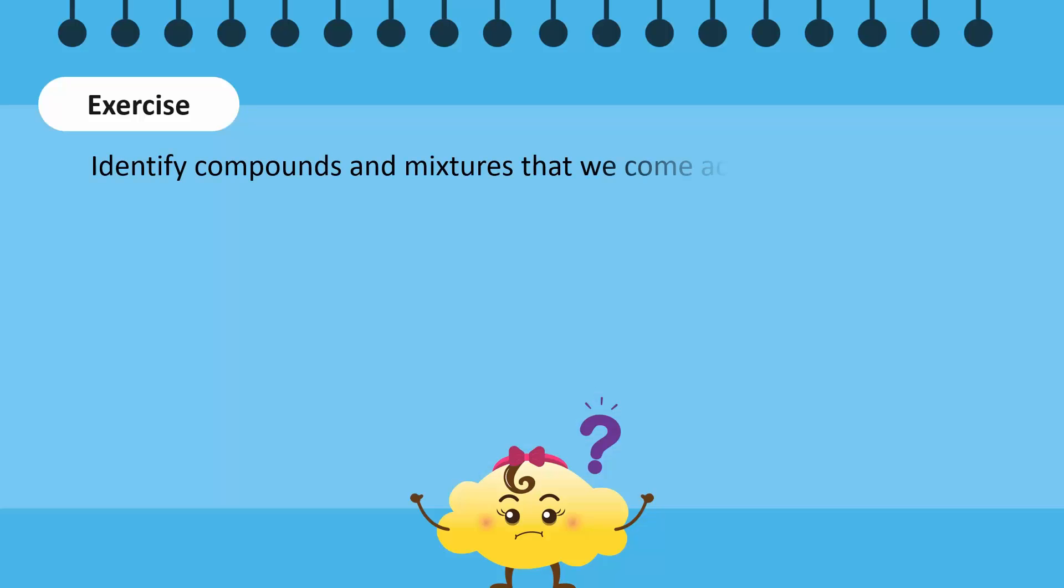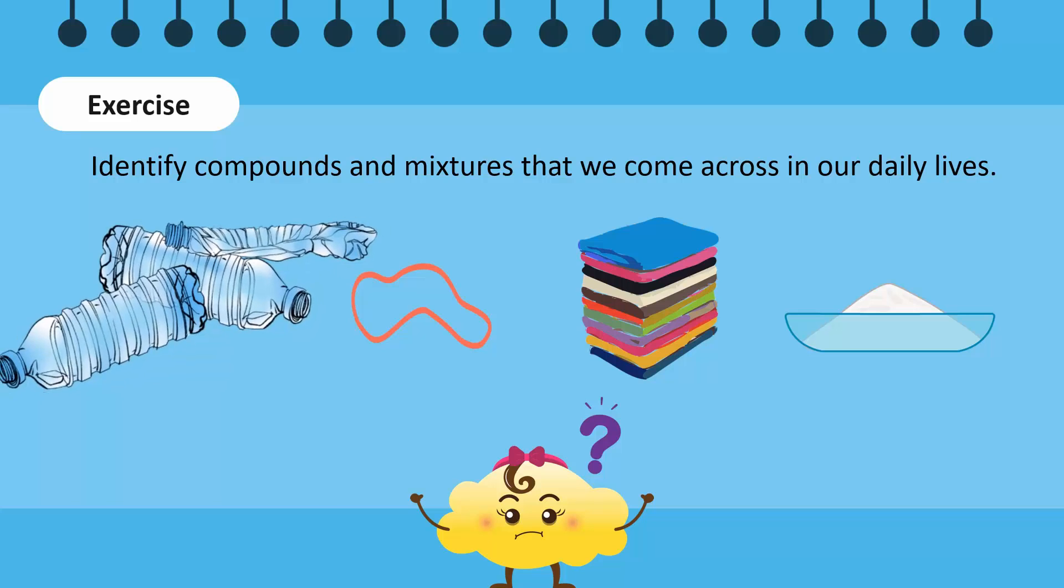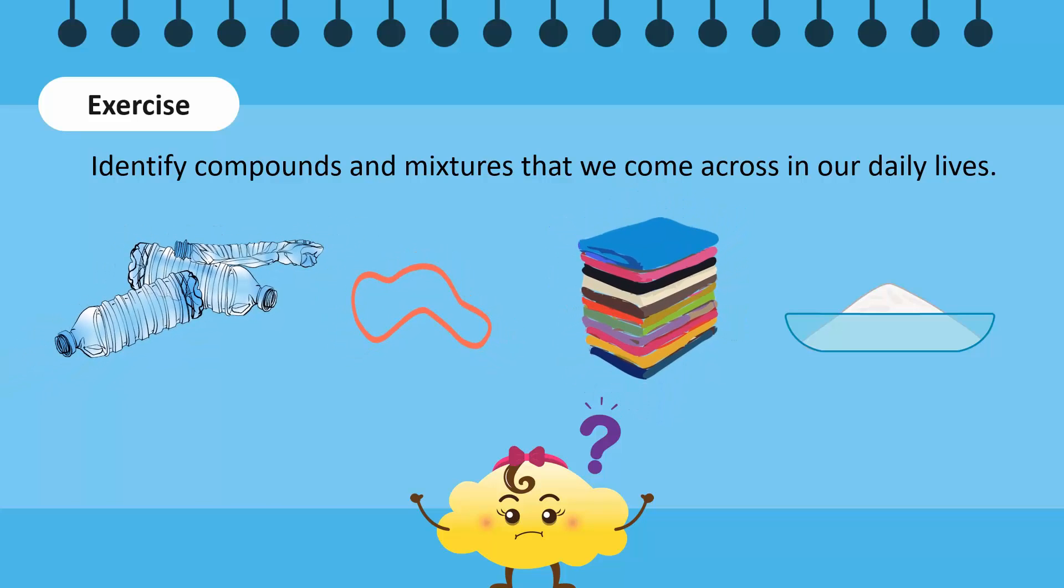Now, let's identify some compounds and mixtures that we come across in our daily lives. Some compounds that we come across daily are plastic, salt, cloth, and rubber. Plastic, rubber, and cloth are made up of carbon, hydrogen, and other elements. Salt is made up of sodium and chlorine.